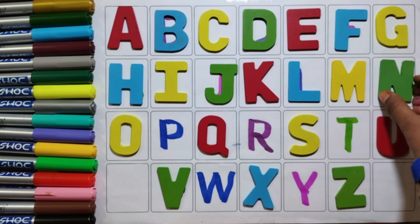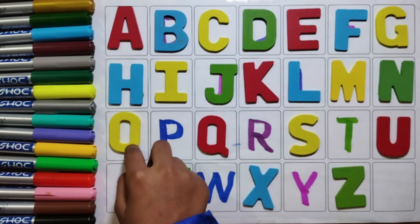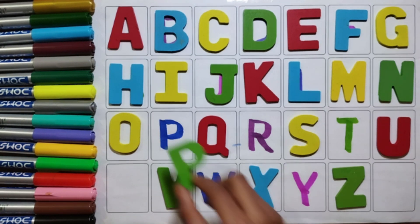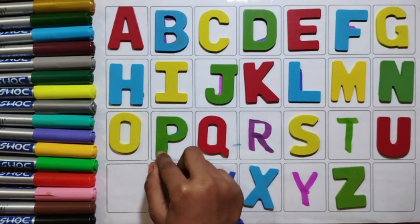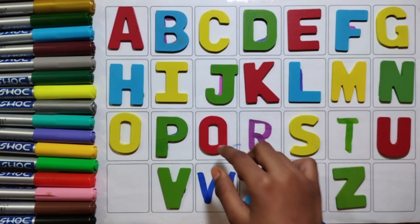Green colour N N for Nest. Yellow colour O O for Octopus. Light green colour P P for Parrot. Red colour Q Q for Queen.